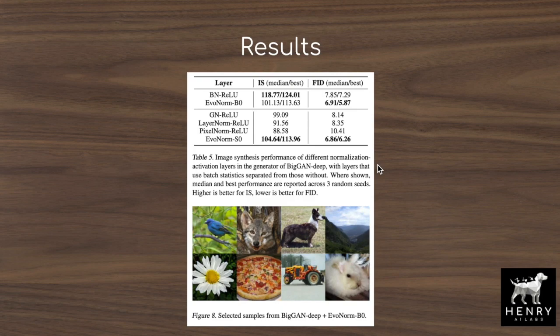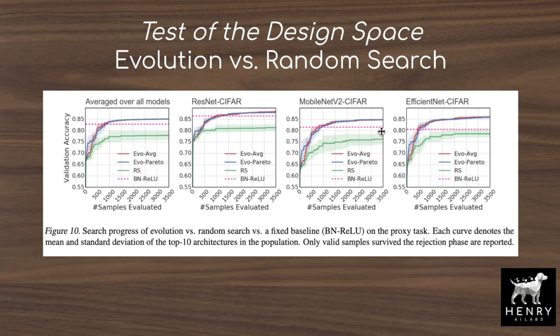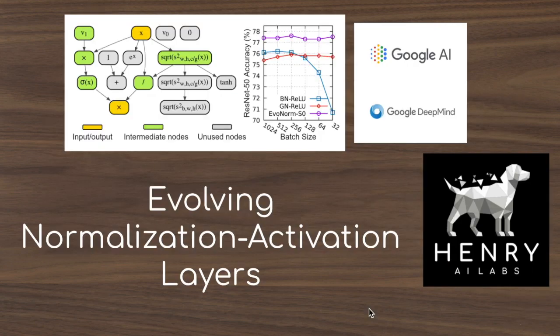An interesting experiment compares their evolutionary search to random search in the same design space, showing evolutionary search significantly outperforms random search. This connects to recent work from Facebook on designing network design spaces, which explores designing a search space where random search performs well. Together these results highlight how both the parameterization of primitive operations and the search algorithm itself matter. Thanks for watching this overview of evolving normalization activation layers — a really interesting AutoML study achieving better performance than manually designed layers. Please subscribe to Henry AI Labs for more deep learning and AI videos.